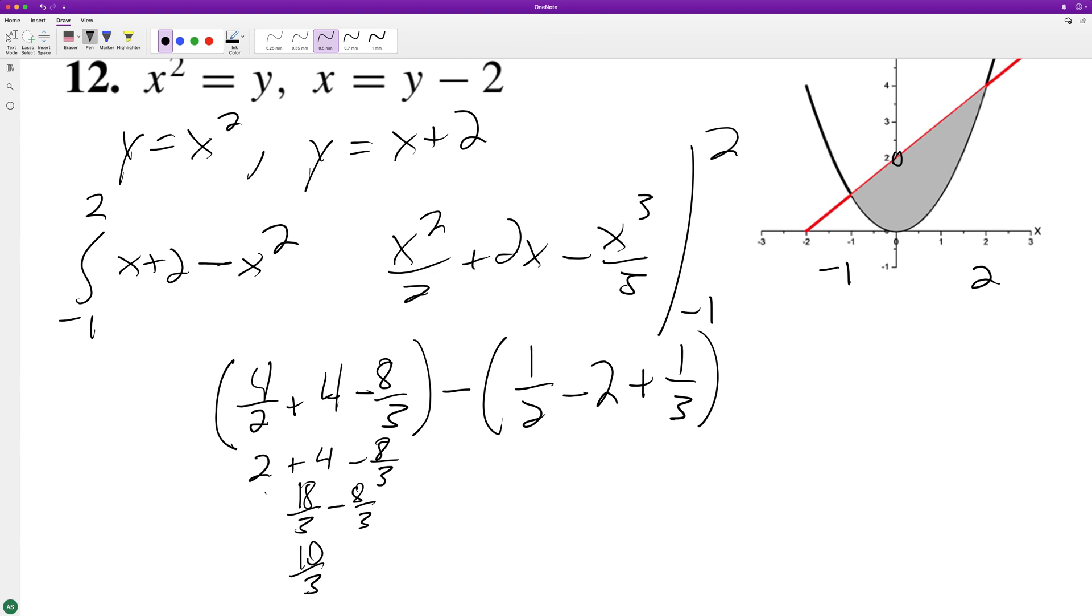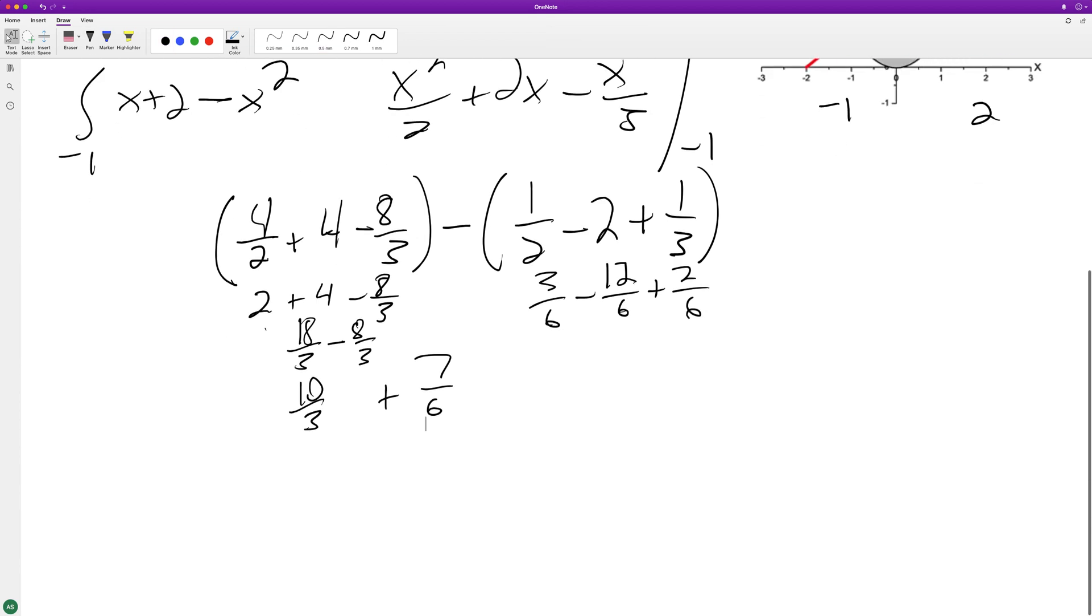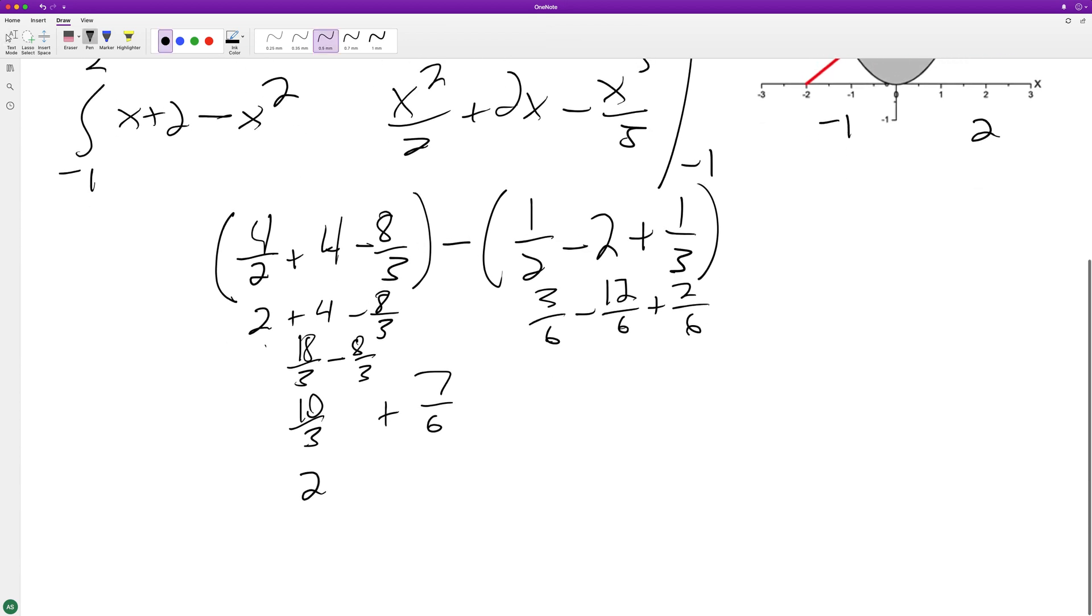This ends up being 2, so 6 is a common denominator. So 3 over 6 minus 12 over 6 plus 7 over 6 plus 7 over 6. So we get 20 over 6.